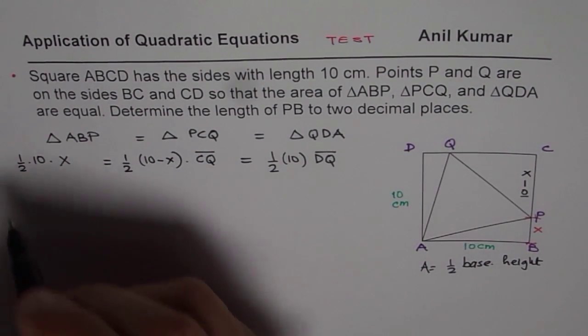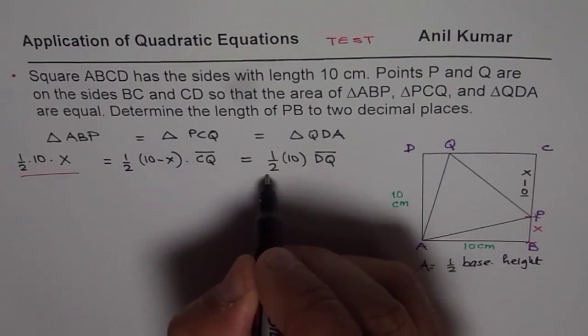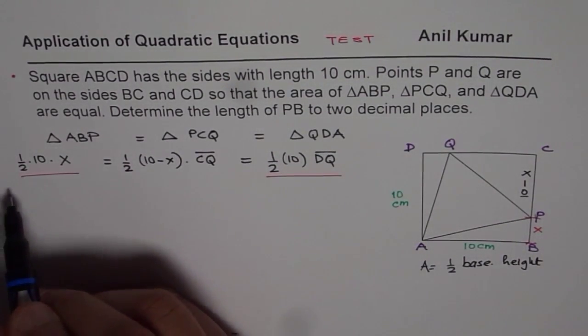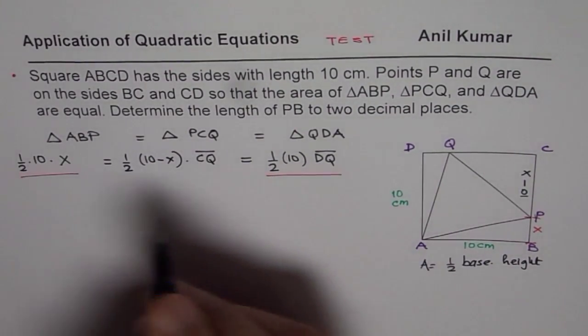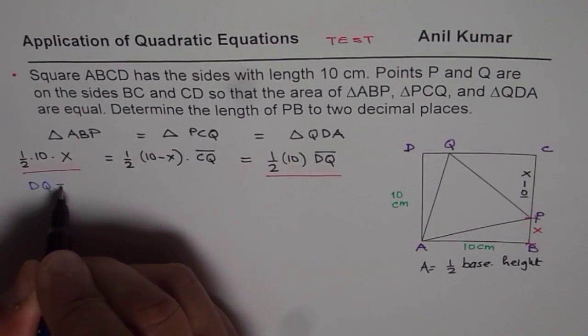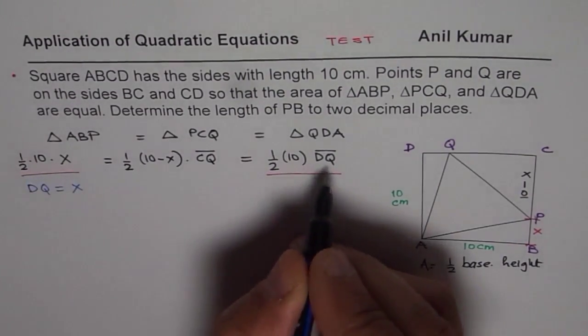Now, if you compare the first and the third part, what do you see? From there, you can conclude that half of 10 times X is half of 10 times DQ, and therefore, you can write DQ is equal to X.